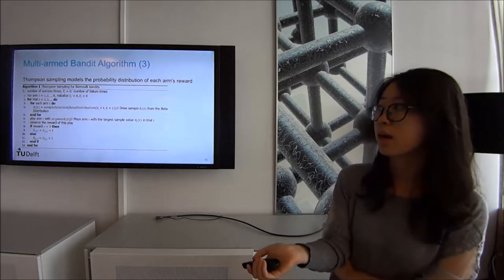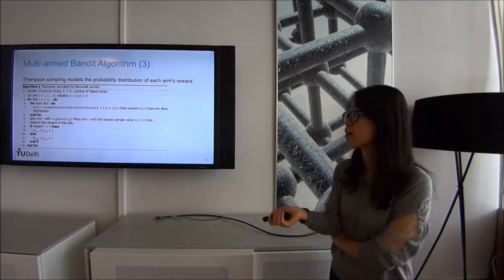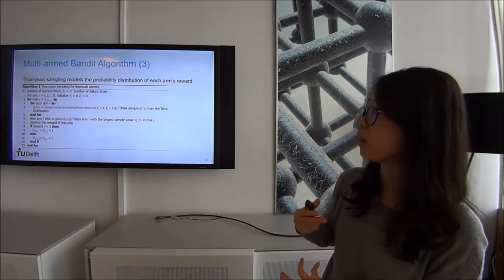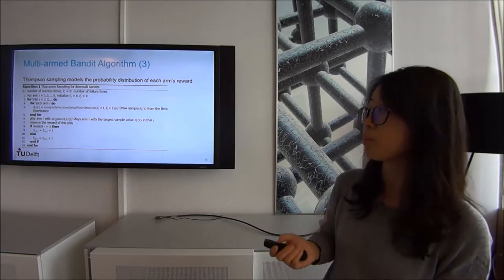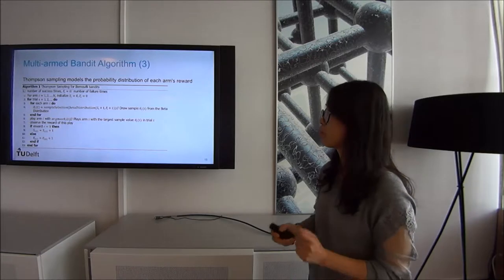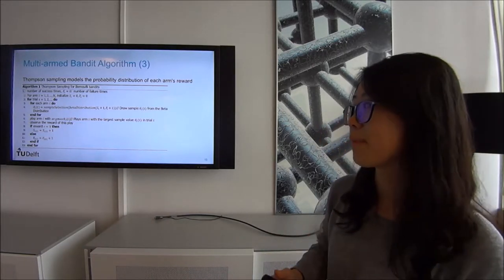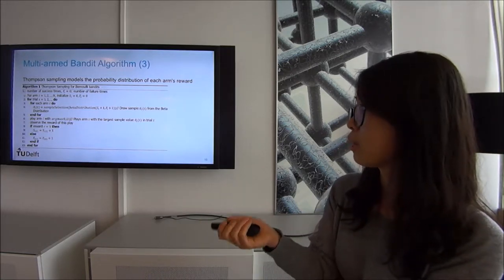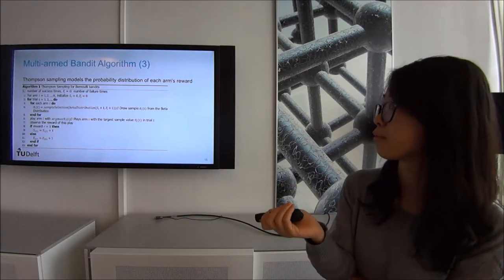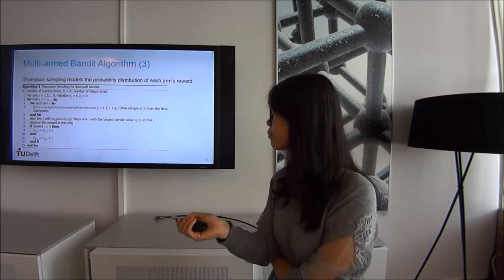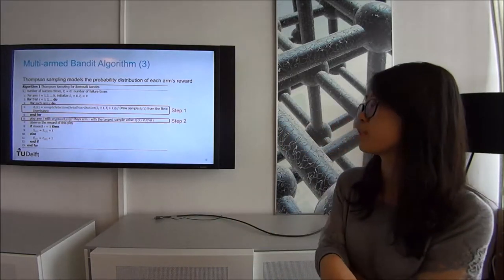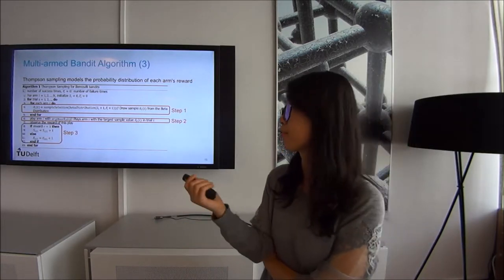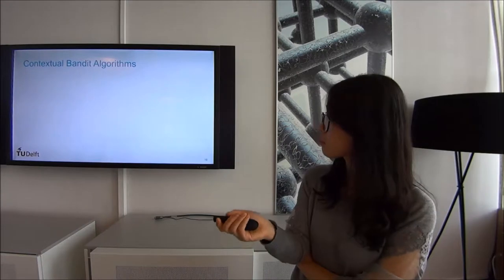Thompson sampling models the probability distribution of each arm's reward. Since our reward is a binary value, a Bernoulli bandit with a beta distribution is implemented. Each time, we draw a sample from the beta distribution of each arm and play the arm with the largest sample value. After observing the reward, the algorithm is updated.